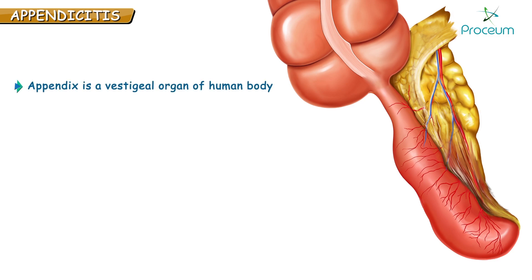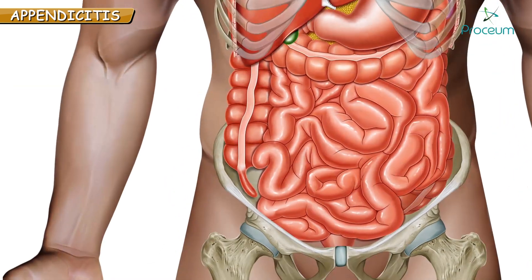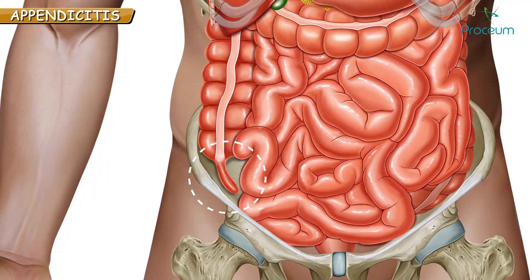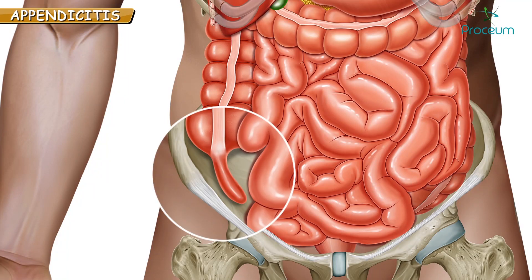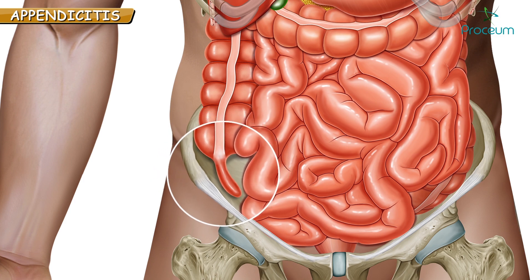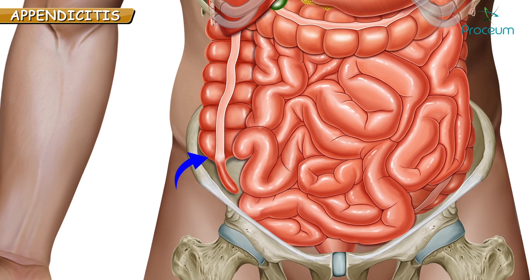Appendix is a vestigial organ of the human body. Vestigial means something that has no function, so appendix technically has no function. Appendix is a tube-like structure that branches off where the large intestine, or so-called colon, begins. It is pencil thin and has a length of 10 cm.